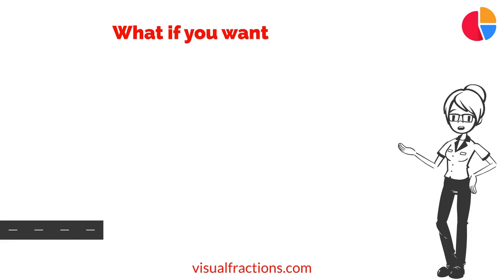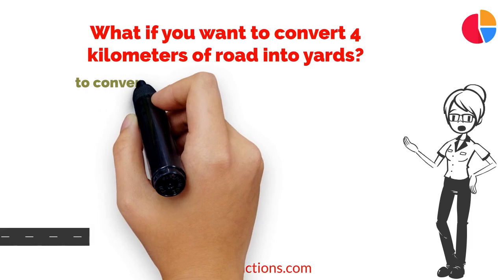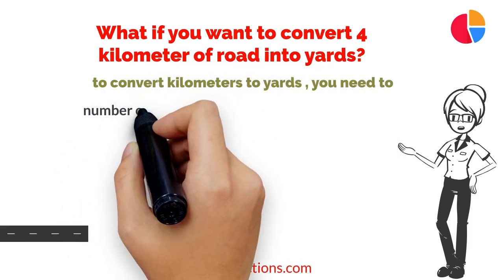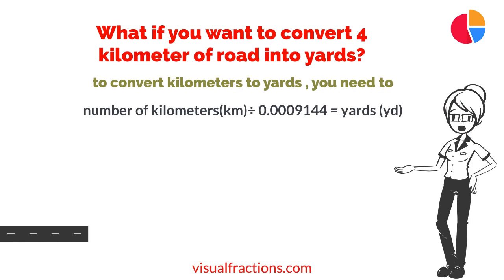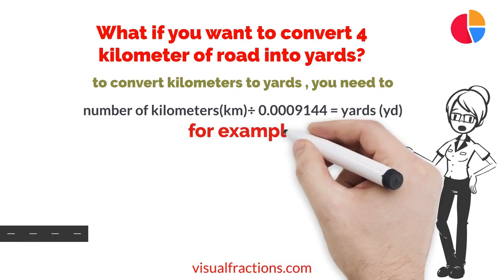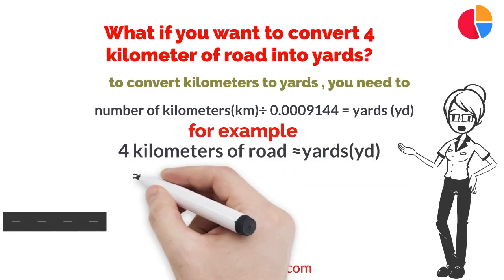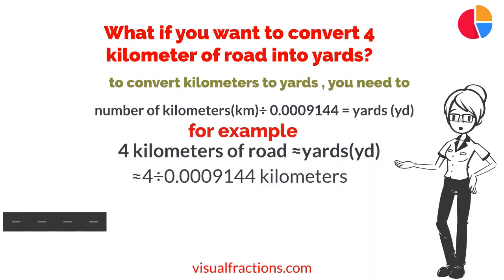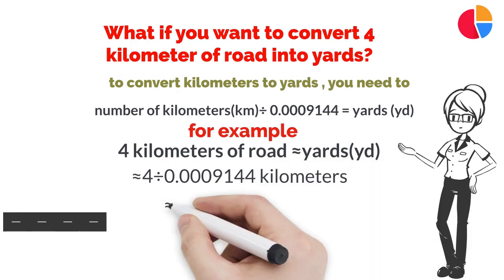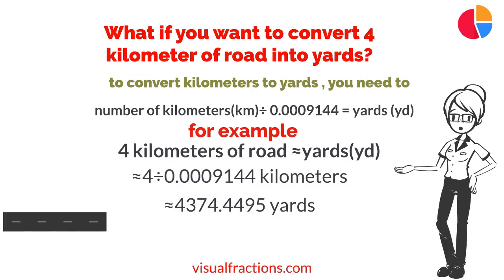But what if you want to convert 4 kilometers of road into yards? No problem. To convert kilometers to yards, you need to divide the number of kilometers by the conversion factor of 0.0009144. We start by dividing 4 by 0.0009144, which gives us approximately 4,374.4495 yards.